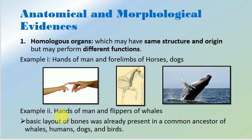Another example is the hands of men and flippers of whales. Human beings use hands for different purposes, but whales use their flippers for swimming. The basic layout of bones was already present in the common ancestors of whales, humans, dogs and birds. But later on, as habitats changed, they changed their organ functions accordingly.